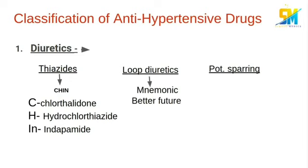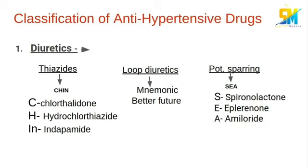We can remember loop diuretics by the mnemonic 'better feature drugs', which we have discussed in the diuretics part 2 video. We can remember the potassium-sparing drugs by the mnemonic 'C': spironolactone, eplerenone, and amiloride.